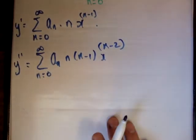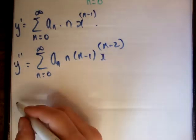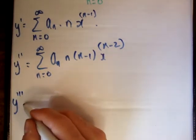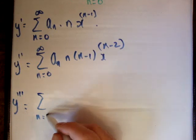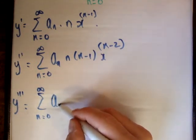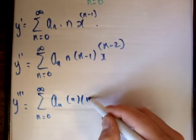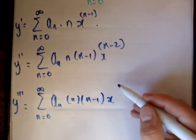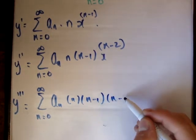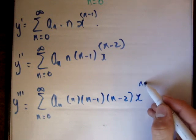And let's do it one last time to get the third derivative. So y triple prime is equal to, once again it starts at the same point, a sub n times n times n minus 1 times x, excuse me, times n minus 2 times x to the n minus 3.